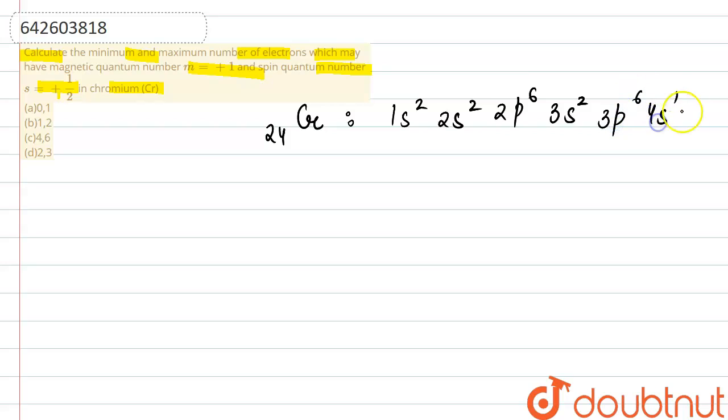Now the next thing we have to determine is the case where m value is plus one and spin quantum number will be plus half. We have to find the maximum as well as minimum electrons for that.